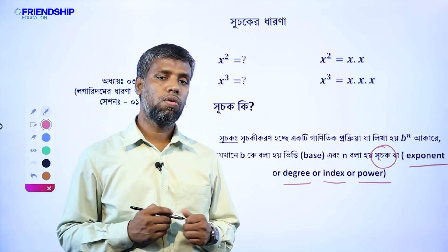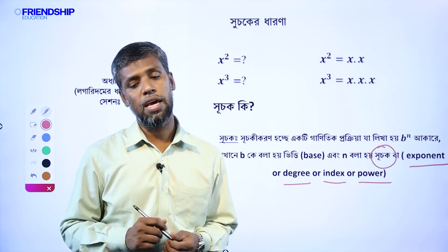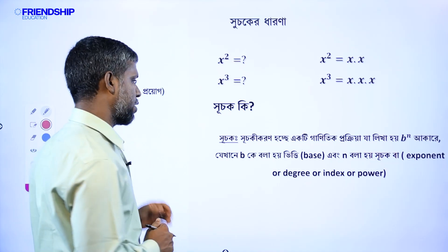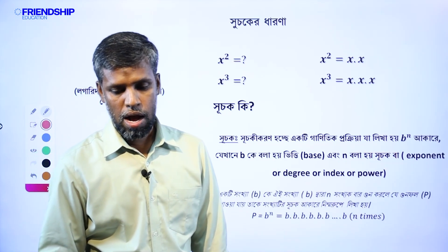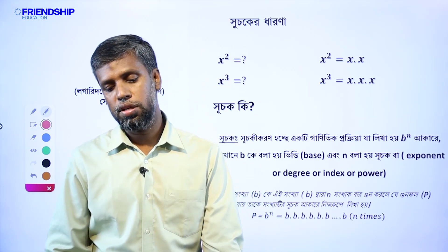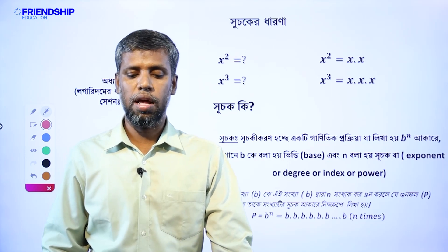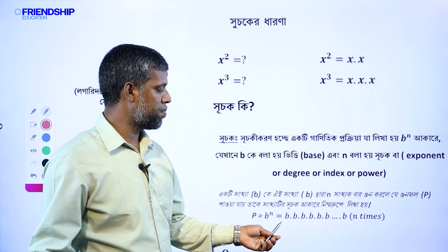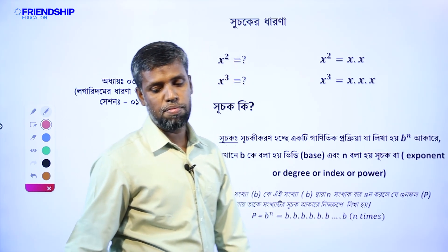We know how to make the sum in b to the power n form. B with base is index. b to the power n means b into b into b — n times multiplication.